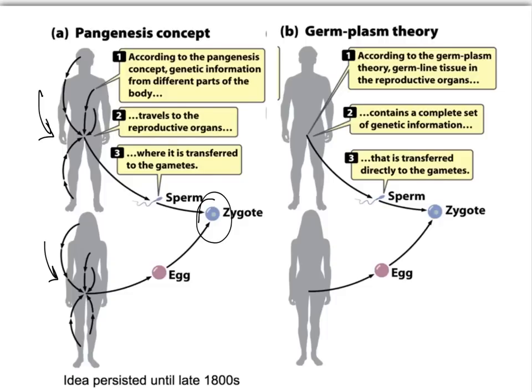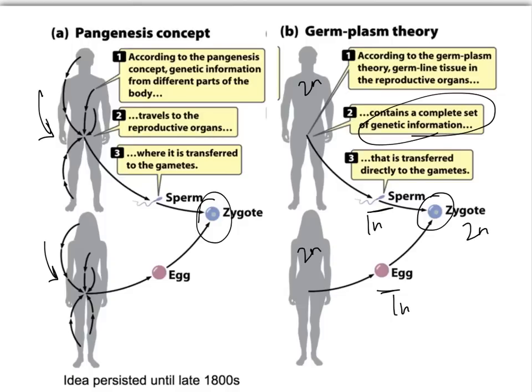We now have a much better understanding of the reproductive process, and we know that the germplasm theory holds that the germline tissue in the reproductive organs — those tissues that go through divisions for producing the gametes — contain a complete set of genetic information. That genetic information is transferred directly to the sperm and to the egg, and those unite to form the diploid zygote. So our sperm and egg are haploid, and the zygote is diploid, as is each adult individual.